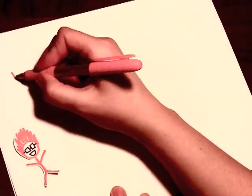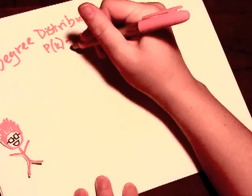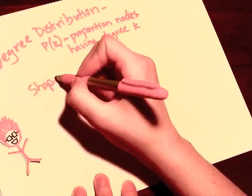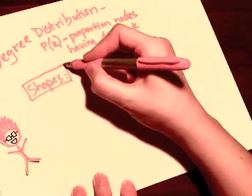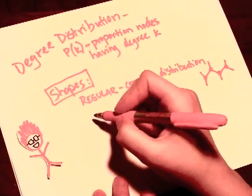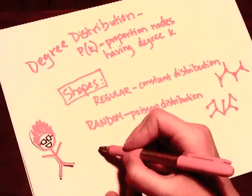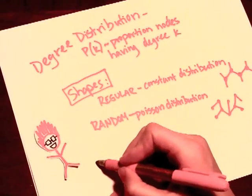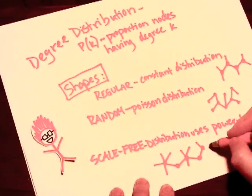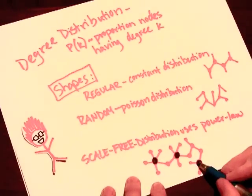Degree distribution, p of k, is the proportion of nodes having that degree of k. That's just my crazy cat, Earl. Sorry. These can have several shapes. Regular, which is a constant distribution with an equal number of connections between each node. You could have random shape, which represents the Poisson distribution, with an unrelated number of connections between each node. Scale free is a distribution using the power law, where a few nodes hold a greater number of connections and serve as hubs.